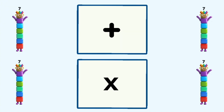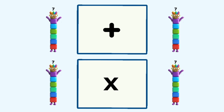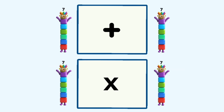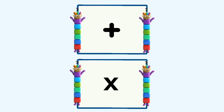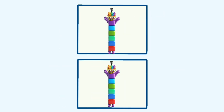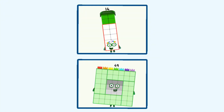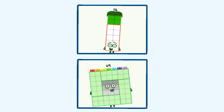7 plus 7 and 7 times 7 equals 14 and 49.